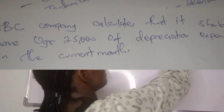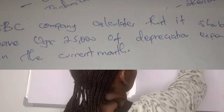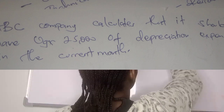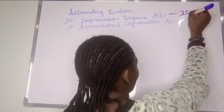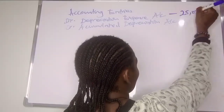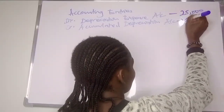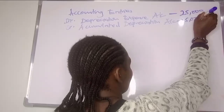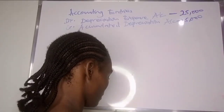So we are going to debit the depreciation expense account with $25,000, then credit accumulated depreciation with $25,000.